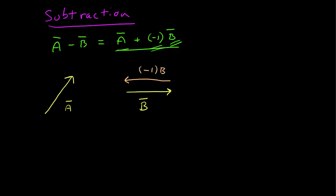So now I can translate it so that the tail is at the tip of a, here's negative b, and I add these two, so the resulting vector is from the tail of a to the tip of b. So here is a minus b.